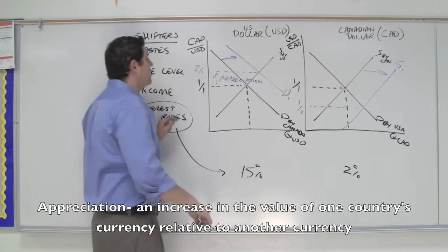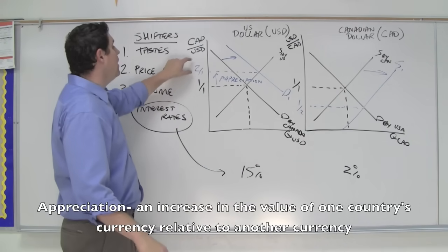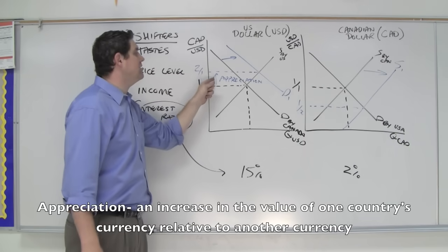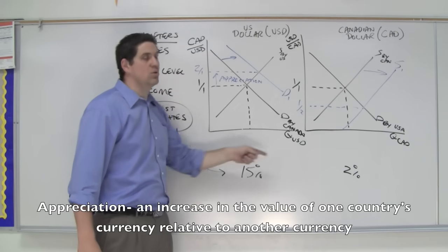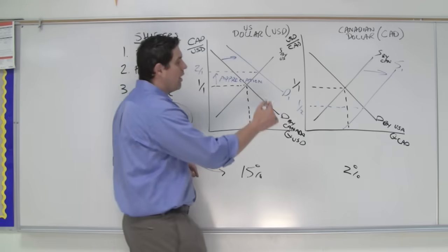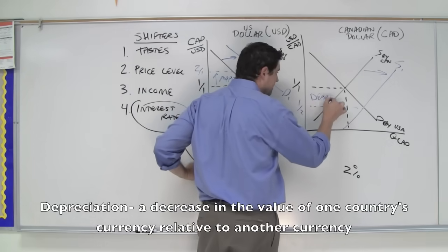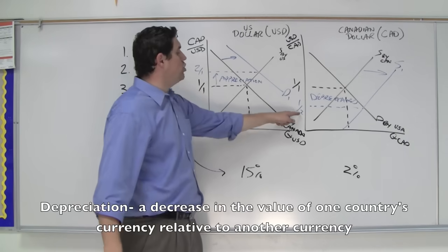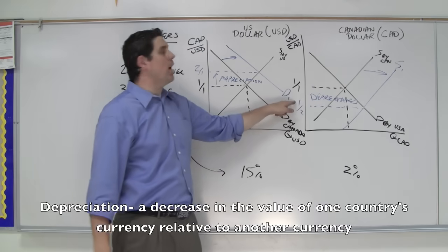Appreciation is when the currency gets stronger, or now you get 2 Canadian dollars for each 1 American dollar. So the United States dollar appreciated relative to the Canadian dollar. What happened to the Canadian dollar? Well, it depreciated. Now you need 2 Canadian dollars to get 1 American dollar.